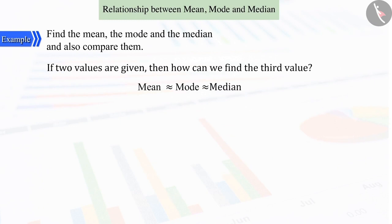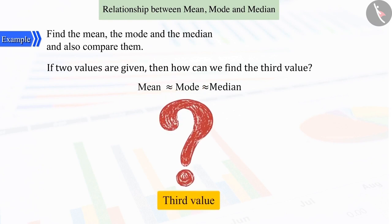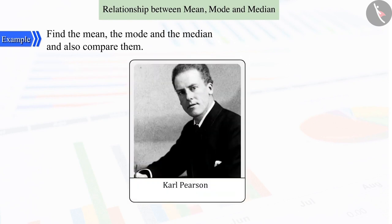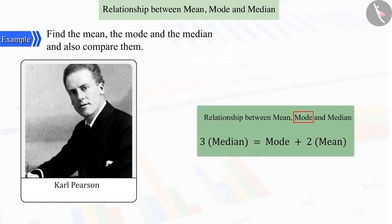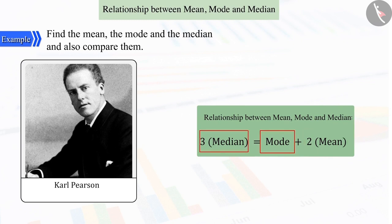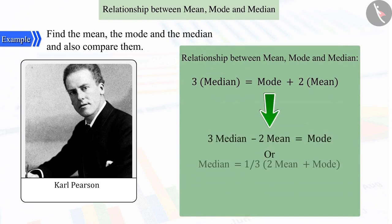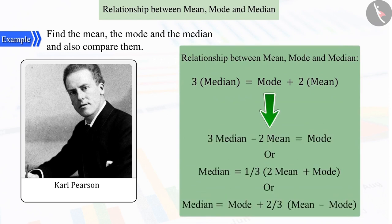But if you are given a situation where the values of any two out of these three are given, can you find the third value? Let's explore this further. The great mathematician Carl Pearson said that a relation between mean, mode and median would be: 3 times the median is almost equal to mode plus 2 times the mean. In this regard, if any two values are kept in this relation, we can get the third value. According to our convenience, we can write this relation in any way.